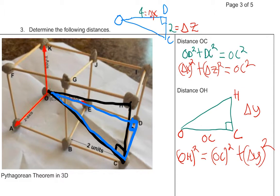So let's begin by looking at the Pythagorean Theorem, first of all, in two dimensions. To begin, we're going to get the distance from O to C. What I'm going to do is shade in a triangle that goes between O and C.